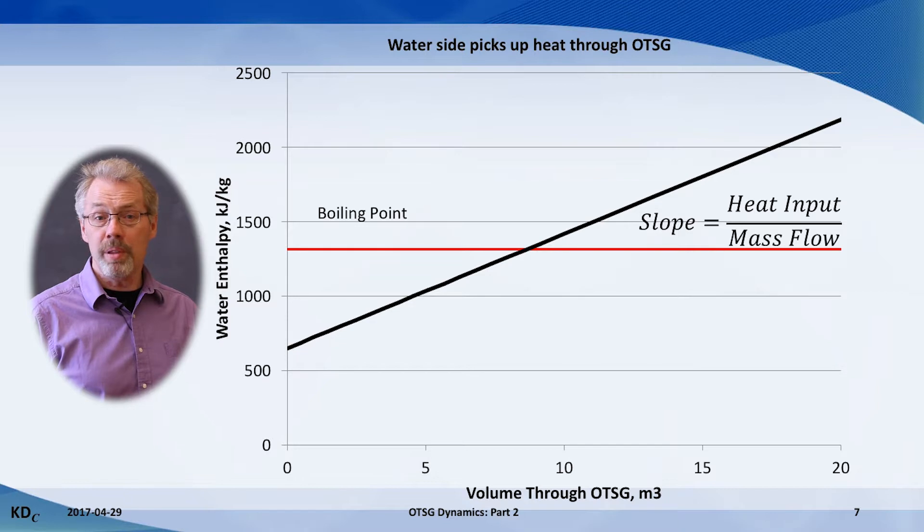The slope of this line is equal to the heat input divided by the water mass flow rate. In this example, the heat input is uniform along the entire path.